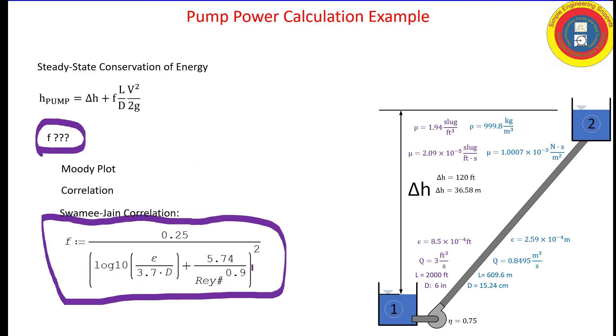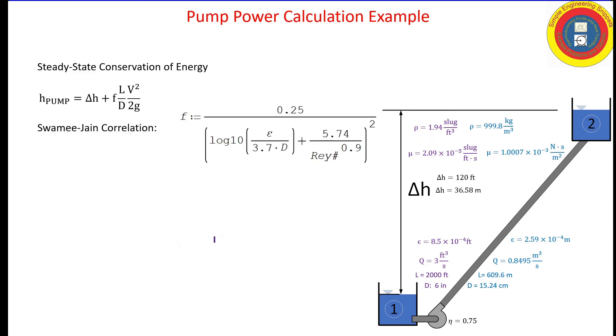We actually know everything to plug into this except for the Reynolds number. The Reynolds number is the density times the velocity times the hydraulic diameter, in this case the round pipe diameter, divided by the viscosity, the dynamic viscosity. We're not provided the velocity, but we're provided the diameter and the flow, so we can calculate that.